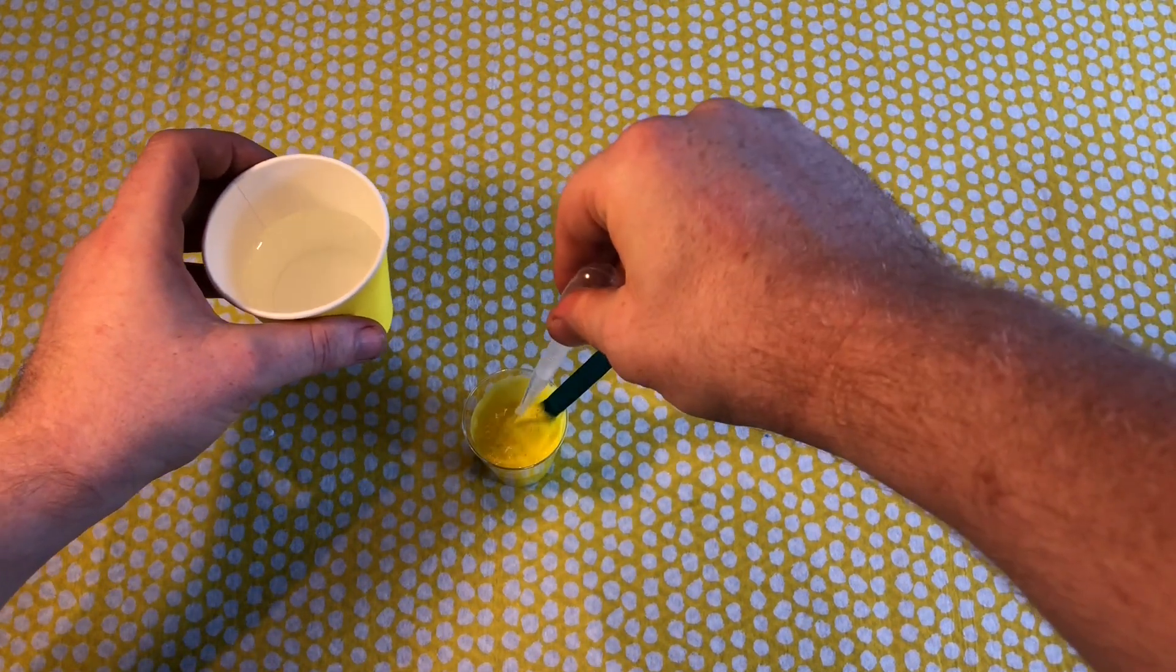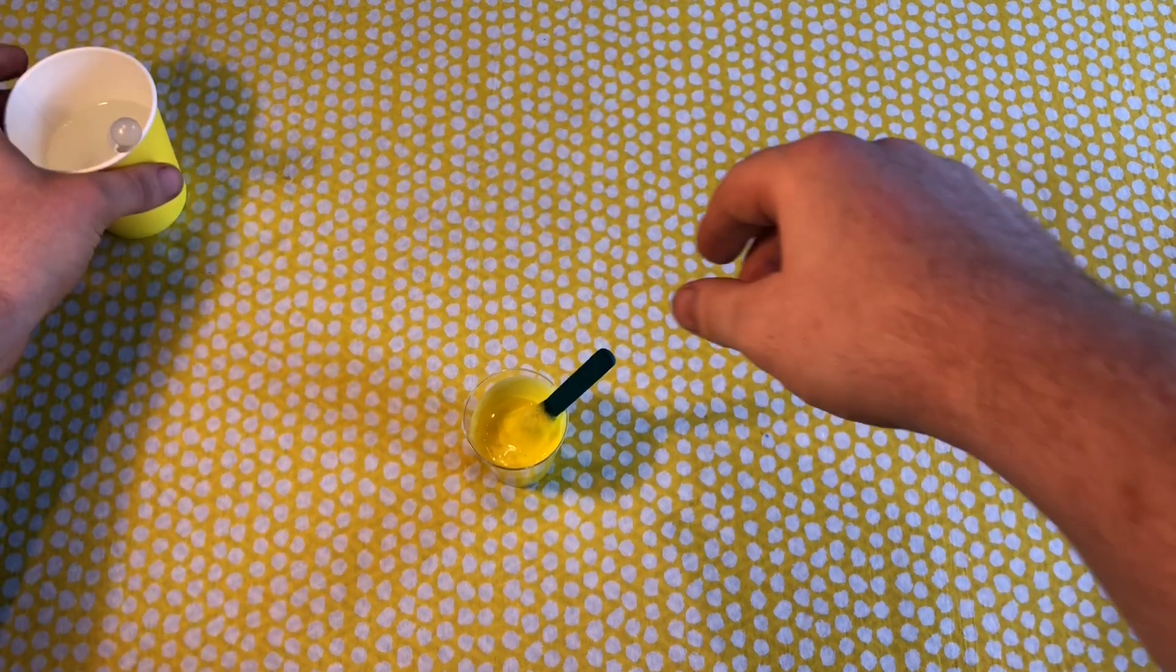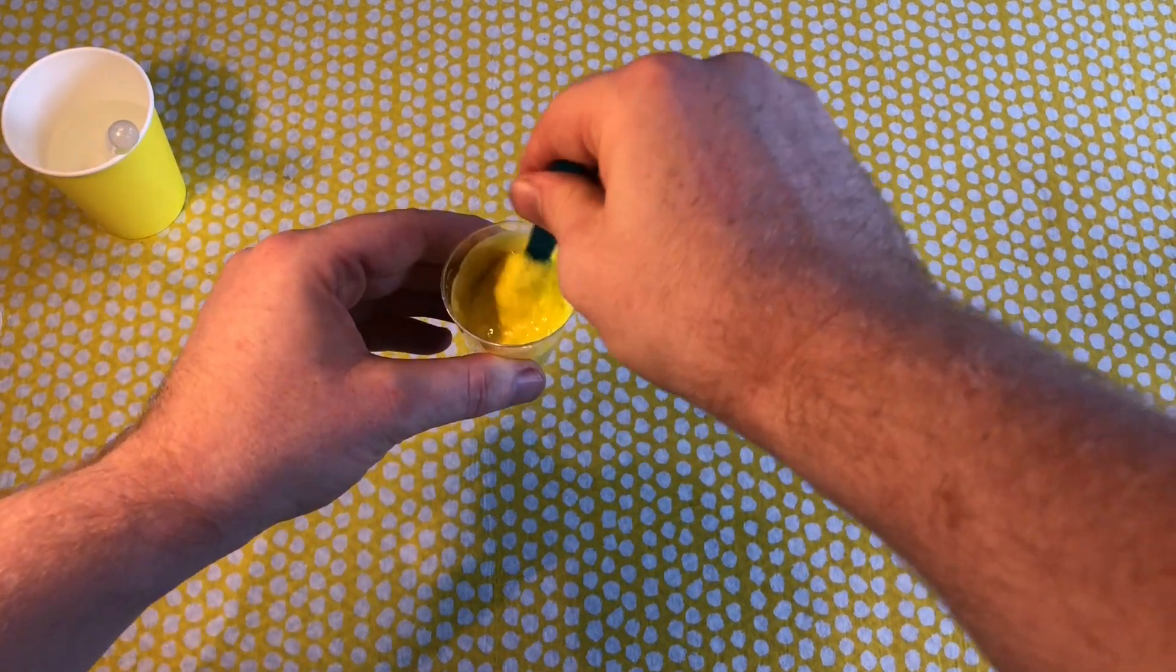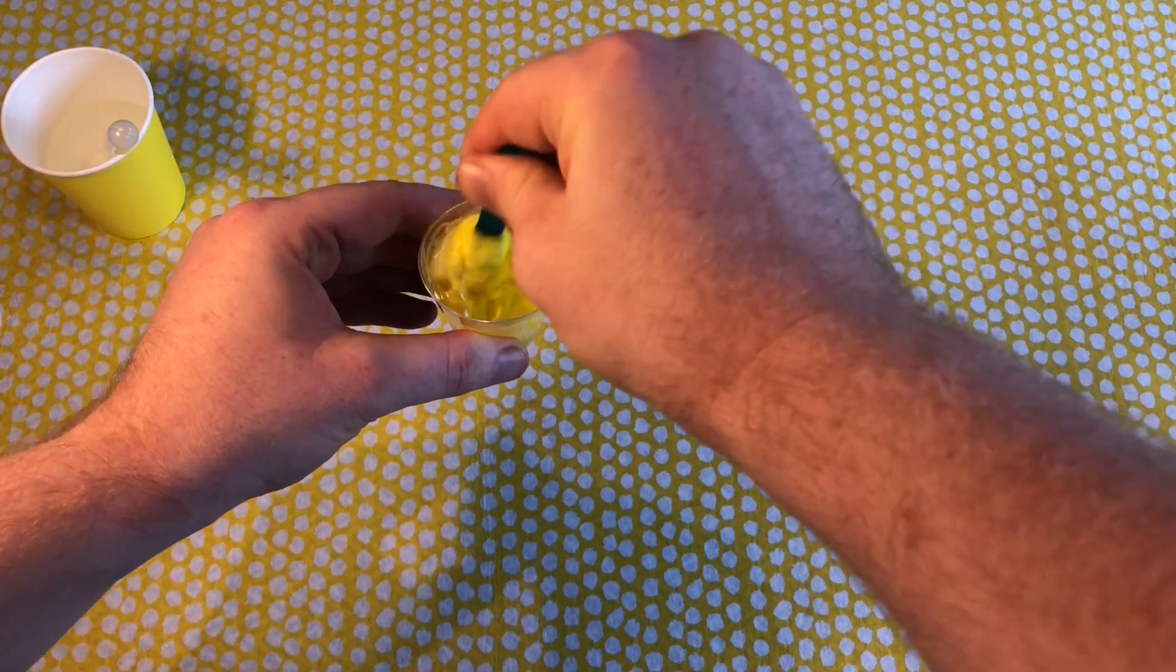What's happened here is that the borax is a natural salt and it's allowed the polymers inside the PVA glue to hold on to one another.